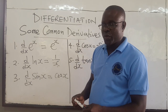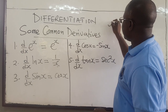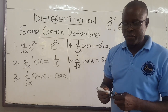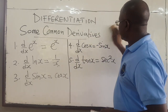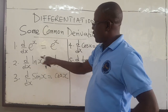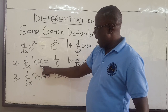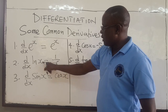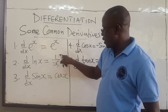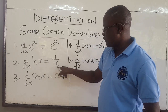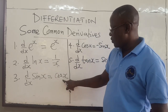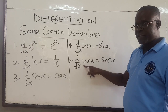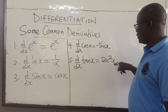Later we'll try to understand how you find the derivative of e to the 2x, e to the 5x, or 3x and so on — we can use the chain rule to do that. The derivative of ln(x) is 1 over x. The derivative of sine x is cosine x. The derivative of cosine x is negative sine x. And the derivative of tan x is sec squared x.